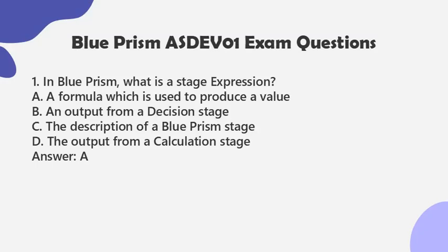a. A formula which is used to produce a value. b. An output from a decision stage. c. The description of a Blue Prism stage. d. The output from a calculation stage. Answer: A.